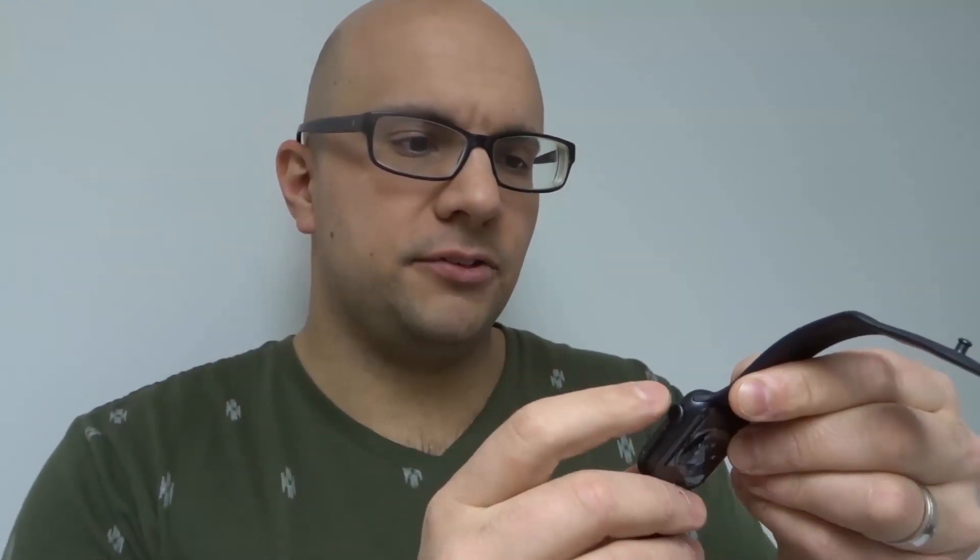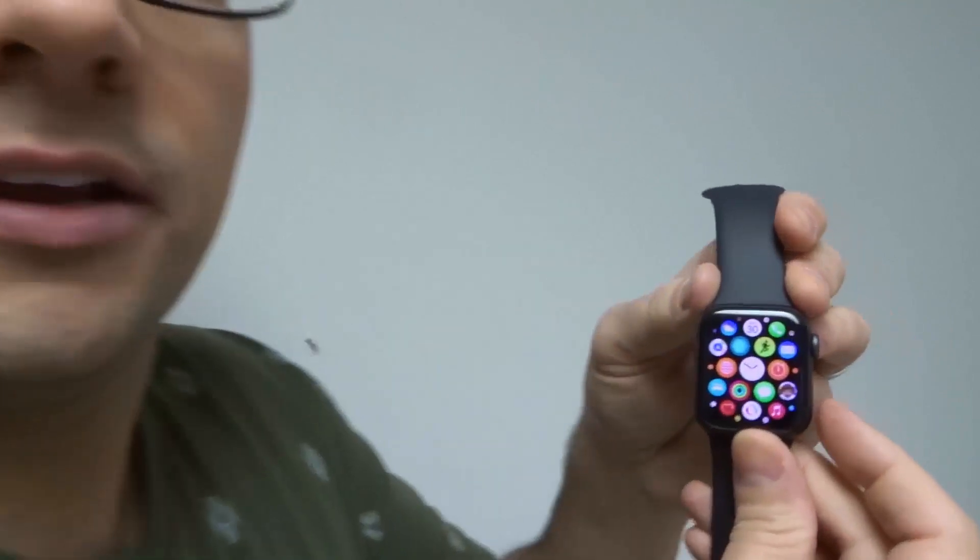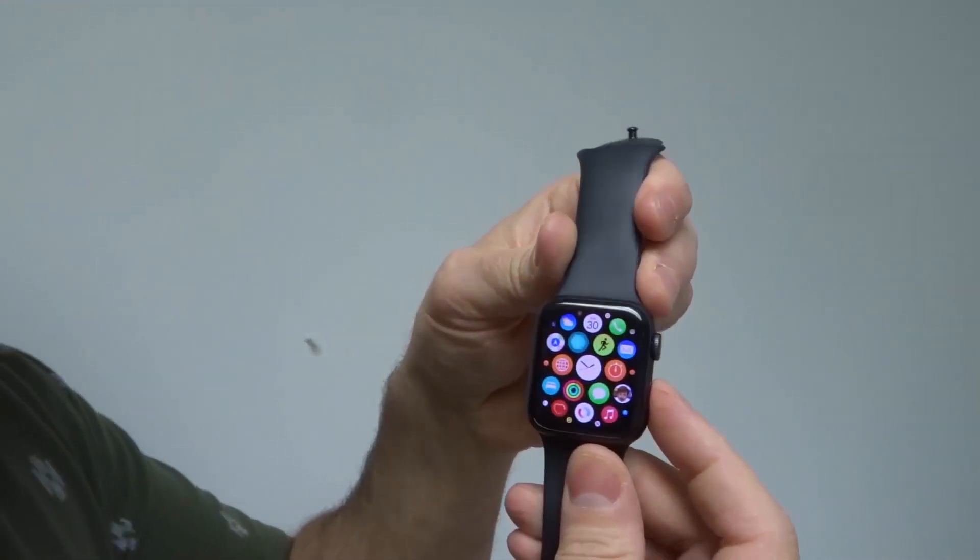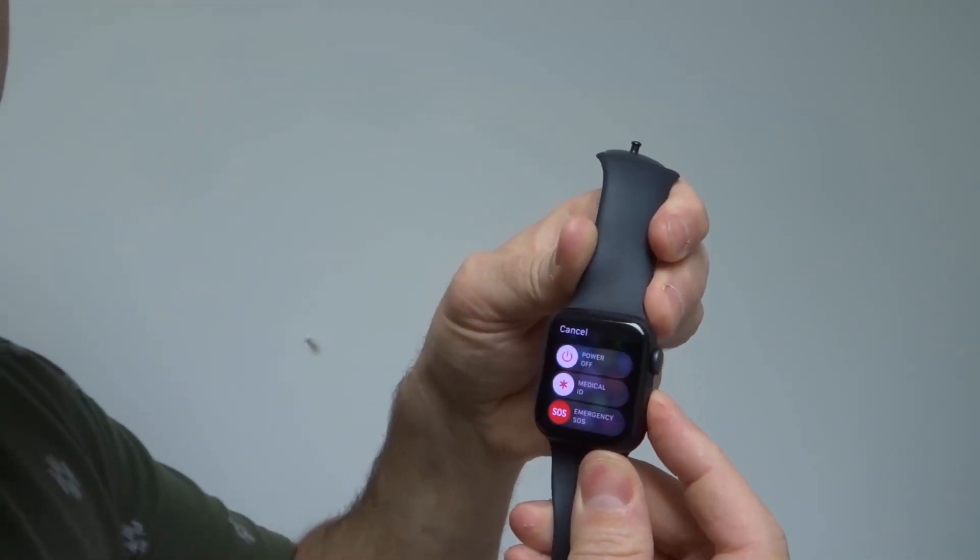And then when you press and hold down on the button, a screen is going to pop up. I'll try and bring up the screen right now. So as you can see, here's the Apple Watch. Press and hold this button down. Okay, just like that. A screen is going to pop up.